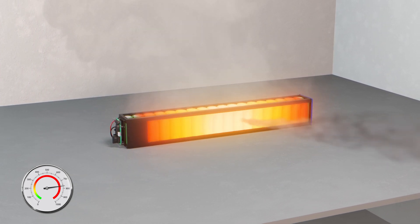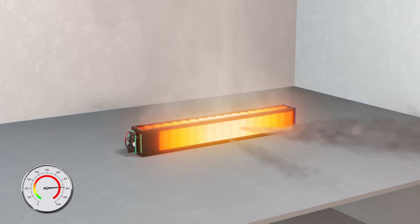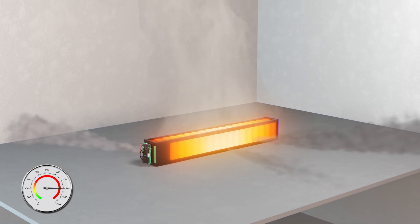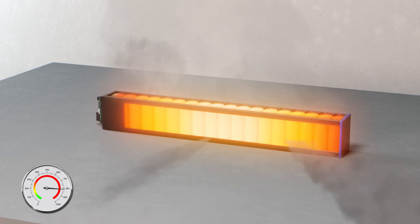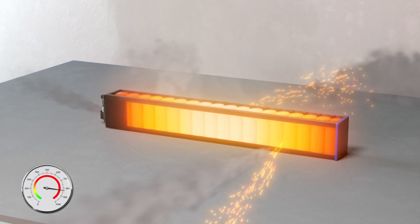Once this exothermic reaction gets hold, even removing external sources that may have caused it will not prevent thermal runaway and a battery fire or explosion. The temperature of the cell accelerates uncontrollably and can reach temperatures in excess of 700 degrees Celsius.